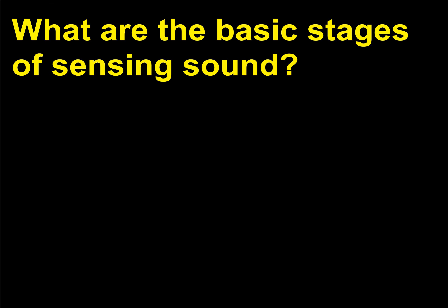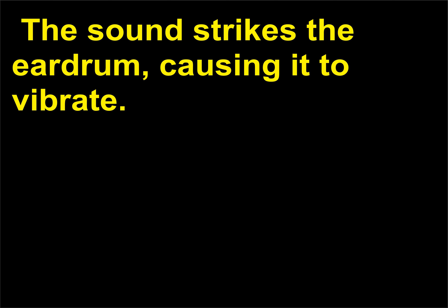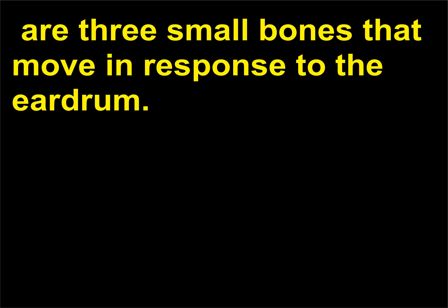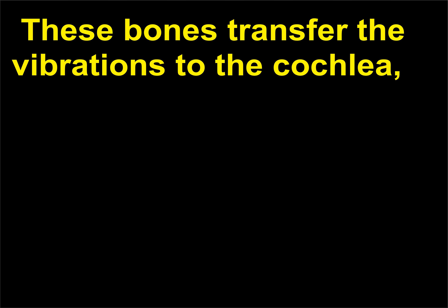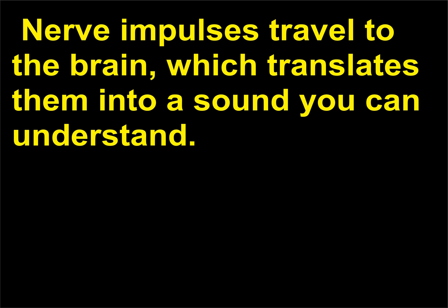What are the basic stages of sensing sound? A sound wave is a vibration in the air that enters the ear canal. The sound strikes the eardrum, causing it to vibrate. Behind the vibrating eardrum, in the middle ear, are three small bones that move in response to the eardrum. These bones transfer the vibrations to the cochlea. Traveling through the cochlear duct toward the auditory nerve, nerve impulses travel to the brain, which translates them into a sound you can understand.